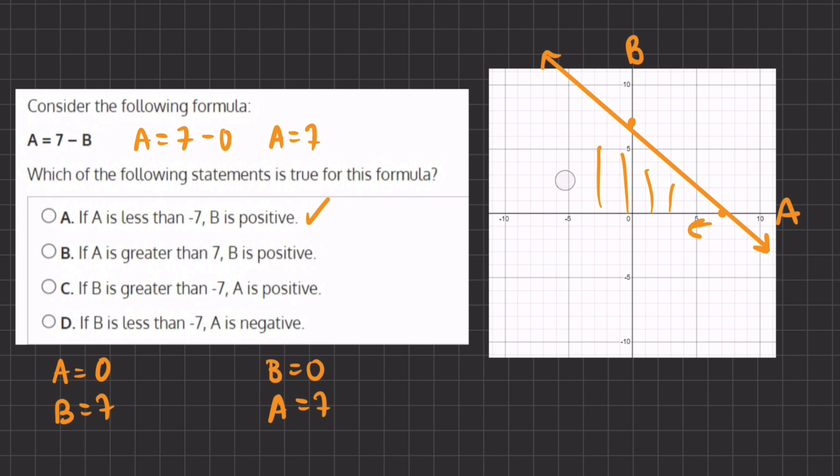but let's figure out also why B, C, and D are incorrect. If A is greater than 7, B is positive. Well, if A is greater than 7, B is in the negative realm of the graph, which is incorrect.